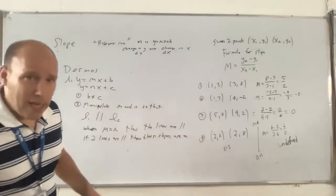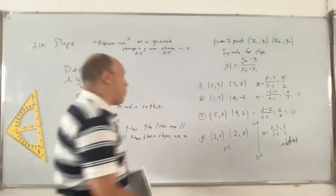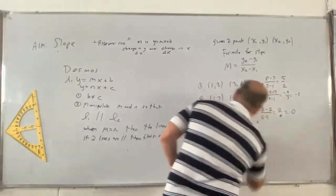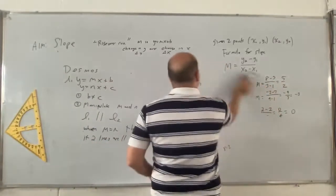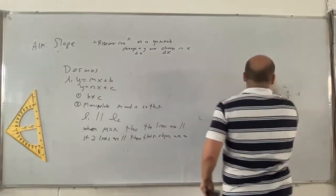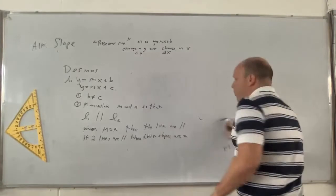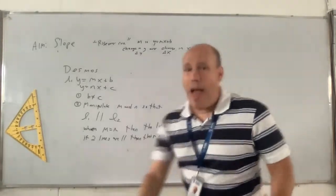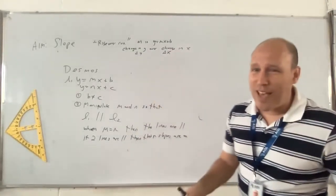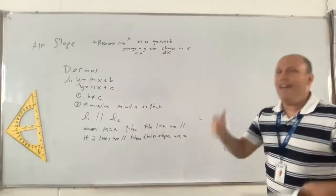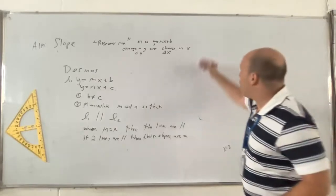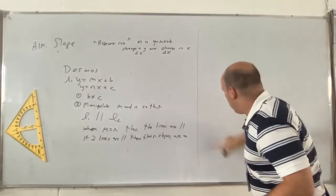So if two lines are parallel, their slopes are equal. This is actually a theorem that goes both ways: if the slopes are equal, the lines are parallel; and if the lines are parallel, the slopes are equal.